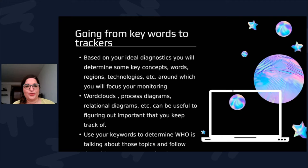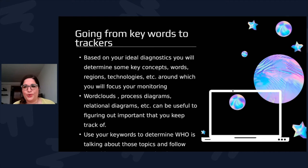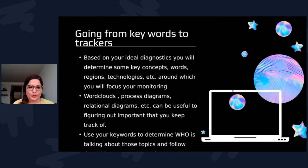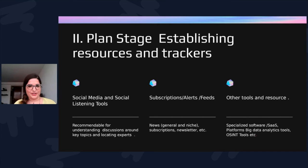A little bit about how to generally do this: based on your diagnosis, go through the keywords. I like to use Excel and word clouds to give me an idea of what the most important things are — you can also use big data analytics tools. You want to have at least 10 to 12 keywords to play around with as you figure out what works best. These will guide who you follow, what you subscribe to, and how you set up your information streams so that information comes to you.